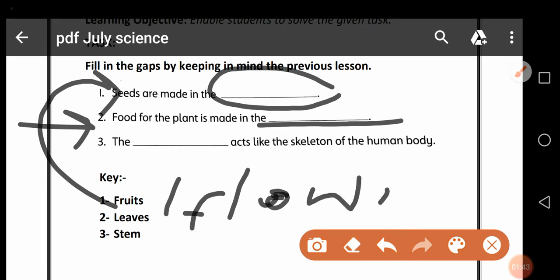You can write flower in the first blank, F-L-O-W-E-R. Because some plants have their seeds made in the flower and some plants have their seeds made in the fruits. You can fill fruits or flower.